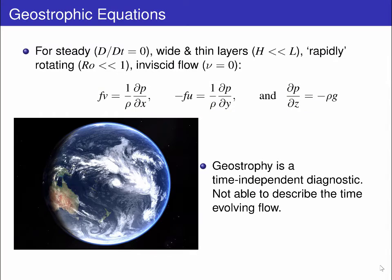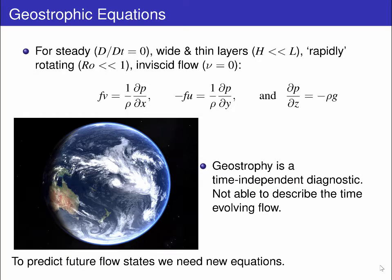These equations describe a balanced state that is time independent. They are not able to describe the time evolving flow, which is an important pursuit for forecasting significant weather events like Cyclone Winston. To achieve this, we need a new set of equations.